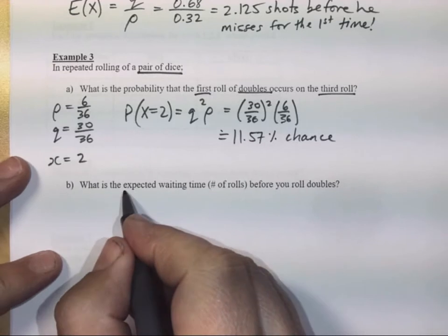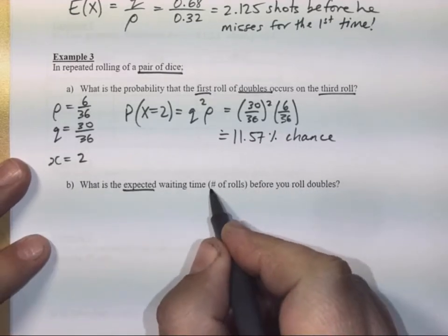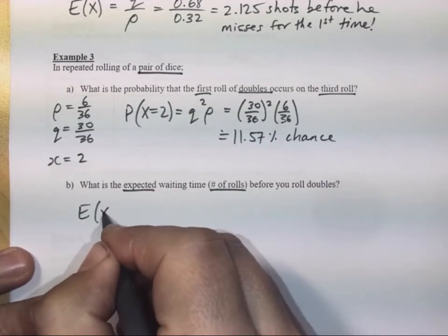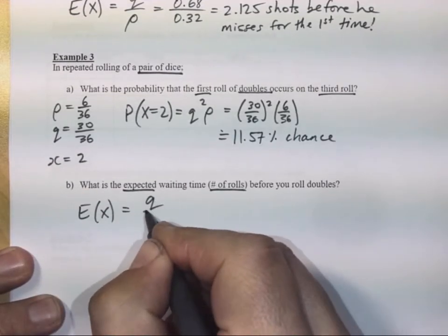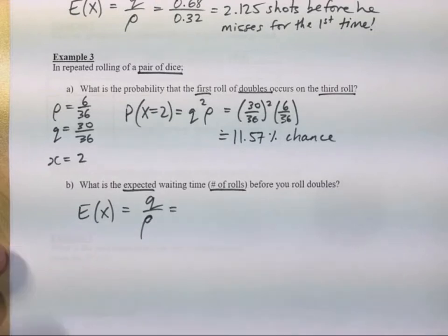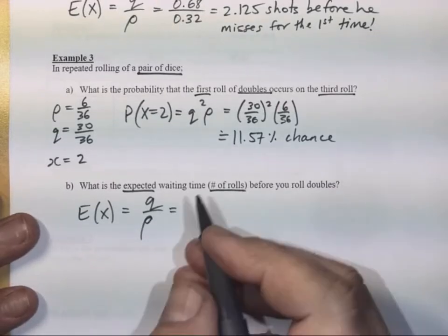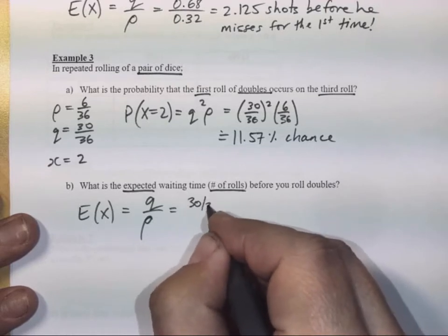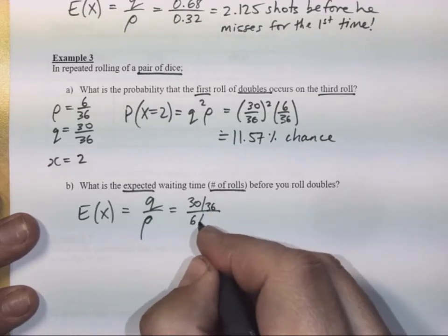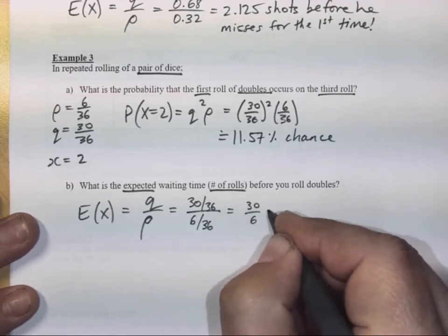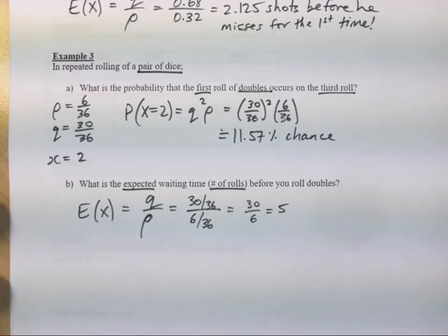Part B, what is the expected waiting time, or the expected number of rolls before you roll doubles? Well we know that the expected value for a geometric is Q divided by P, and Q divided by P here would be 30 in 36 divided by 6 in 36, or 30 divided by 6, or 5.